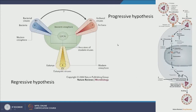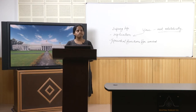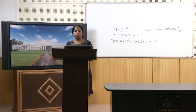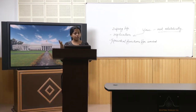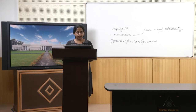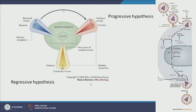Where did viruses come from? A recent hypothesis is that viruses were the first agents able to replicate themselves — proto-viruses that evolved even before LUCA, the last universal common ancestor. So before cellular life arrived, we had an ancient virosphere. This theory was published in Nature in 2006, and I highly encourage you to go through Nature Reviews occasionally.